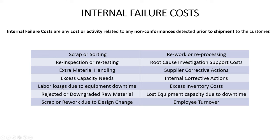Lost labor is another internal failure cost — if you have a non-conformance and idle your equipment, all the lost labor associated with that downtime counts. Excess inventory is a hidden cost: if a process isn't capable and has yield loss or downtime, the business often holds extra inventory to mitigate risk, and all that excess inventory is simply waste tied to internal failure. Other costs include scrap or rework due to design changes. And employee turnover: employees get frustrated when they keep seeing the same repetitive issues go unsolved, which eventually leads to turnover — absolutely an internal failure cost.